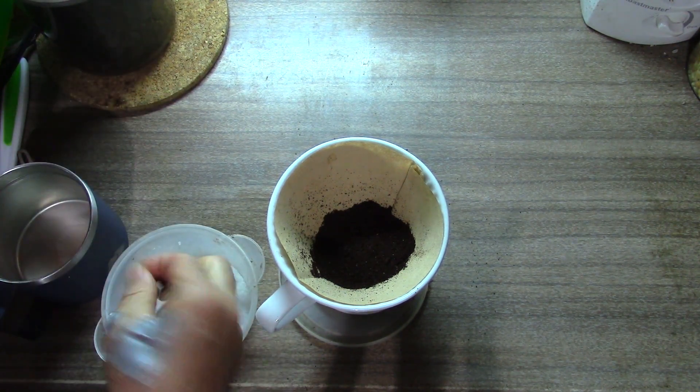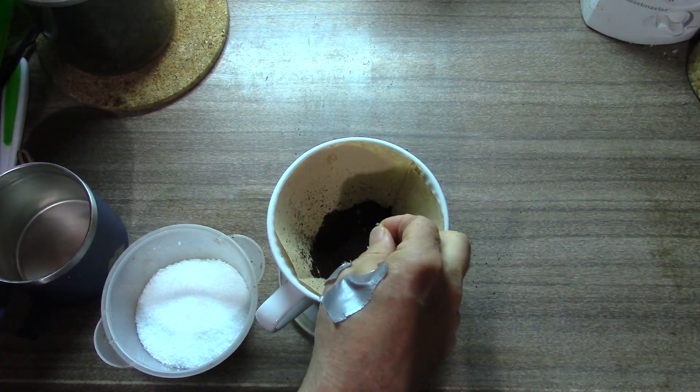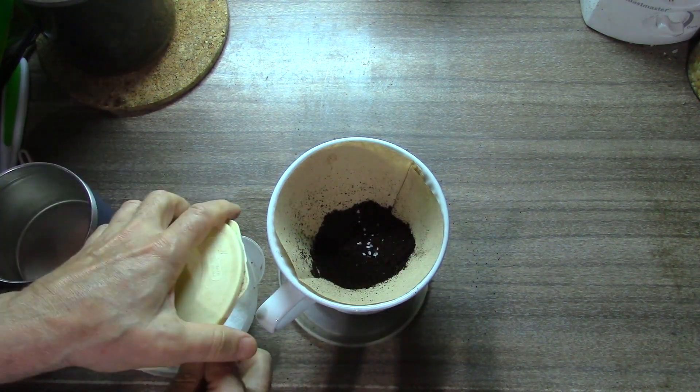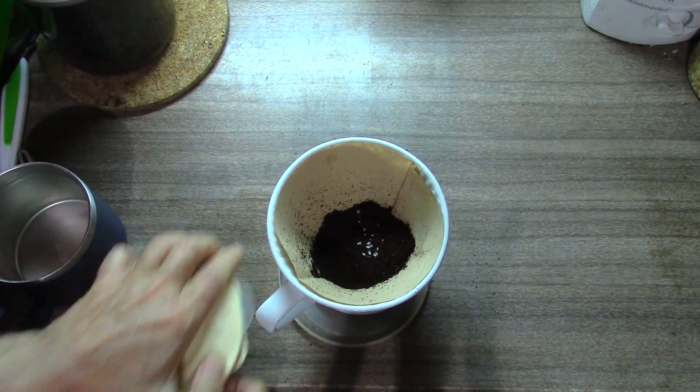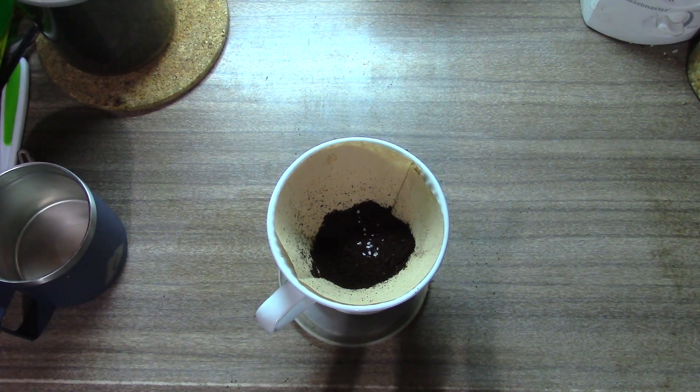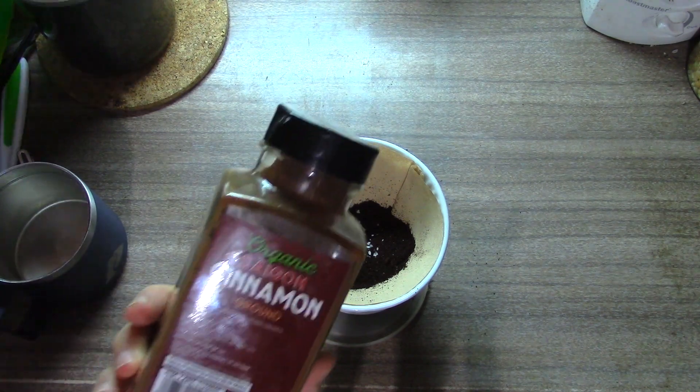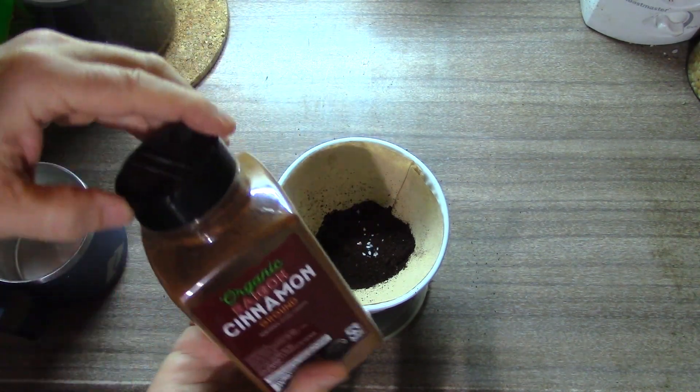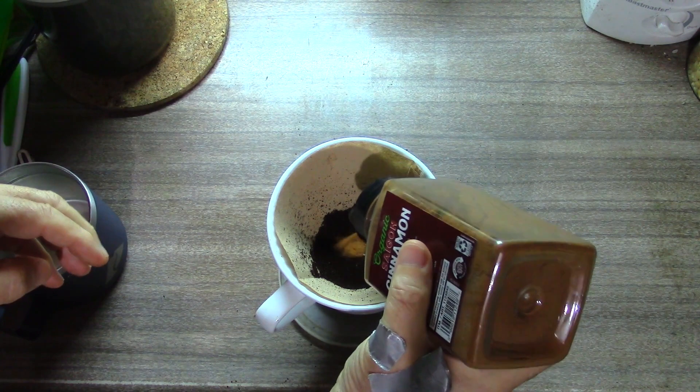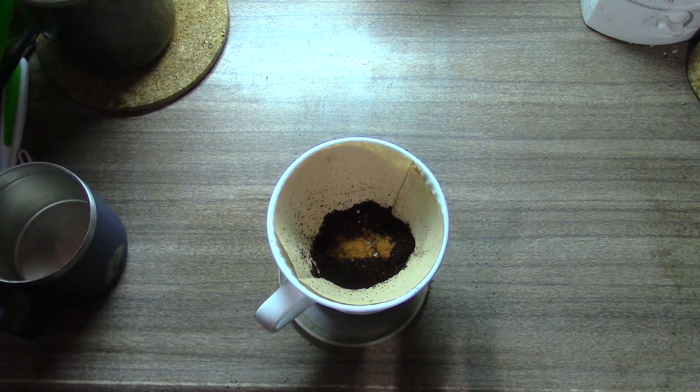There's our coffee, goes back in. What can we do to this coffee? We take a couple of grains of kosher salt, add it to the top, and a little bit of Saigon cinnamon. Add that to the top too.